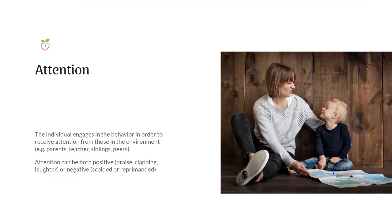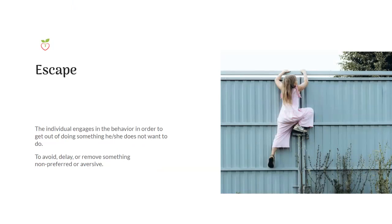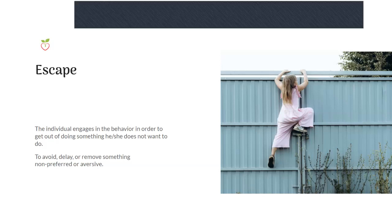Attention can be both positive and negative. Positive attention would be praise, clapping, laughter, cheering. Negative attention can be scolding, reprimanding, yelling, or telling them not to do something. Even though you think it's a punishment because you're yelling or saying no, it can actually be attention — just in a negative manner. Another function of behavior is escape: the individual engages in the behavior to get out of doing something they do not want to do — to avoid, delay, or remove something non-preferred. How many times do our kids flop on the floor and scream because it's bath time?